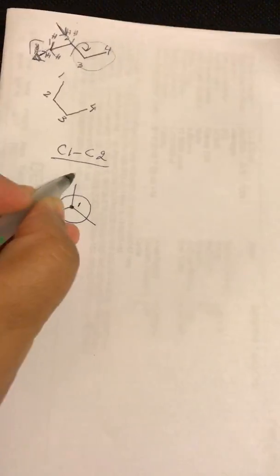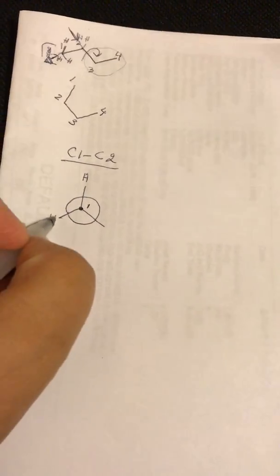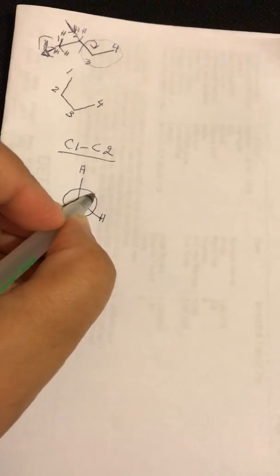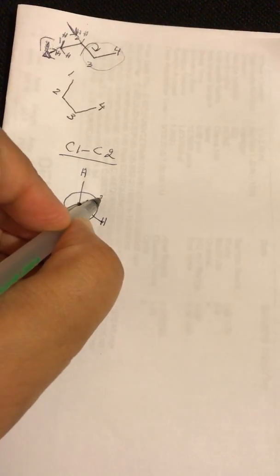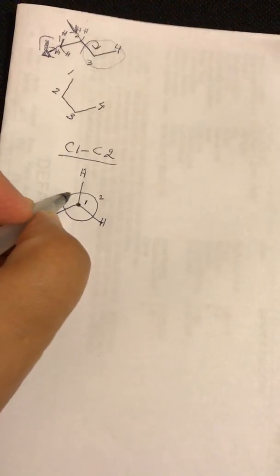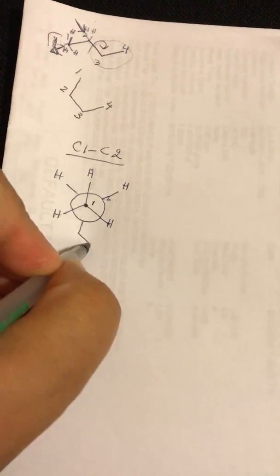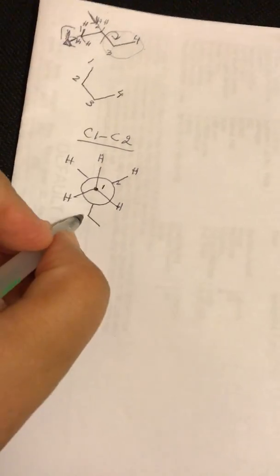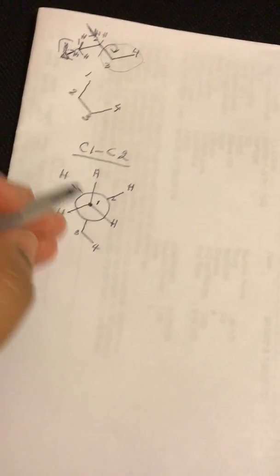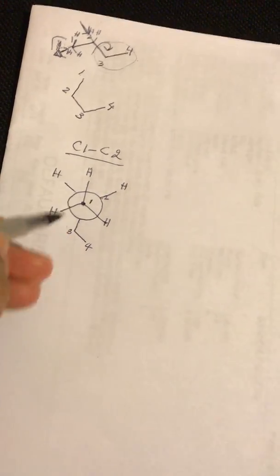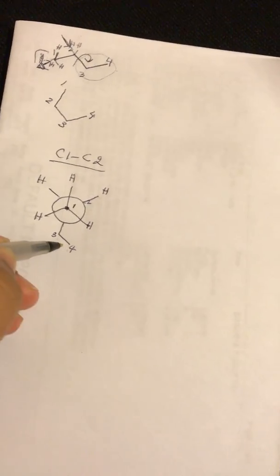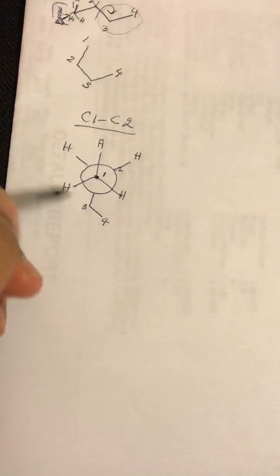On the front one, which is the C1, I have three hydrogen atoms. On the back one, which is the C2, I have two hydrogens and one ethyl group, because that's the C3 and the C4. So I'm going to draw it just like that. So I'm viewing through C1-C2. Notice 3 and 4 comprise of that ethyl group, and everything else is hydrogen.